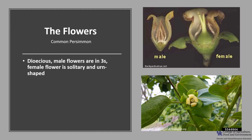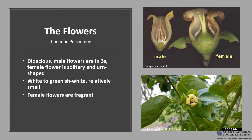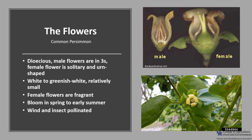Persimmon is dioecious, with male and female flowers on different trees. The male flowers are in threes and the female flowers are solitary and urn shaped. They are both white to greenish white and relatively small or inconspicuous. The female flowers are fragrant and bloom in early spring to early summer when the leaves are about half grown.